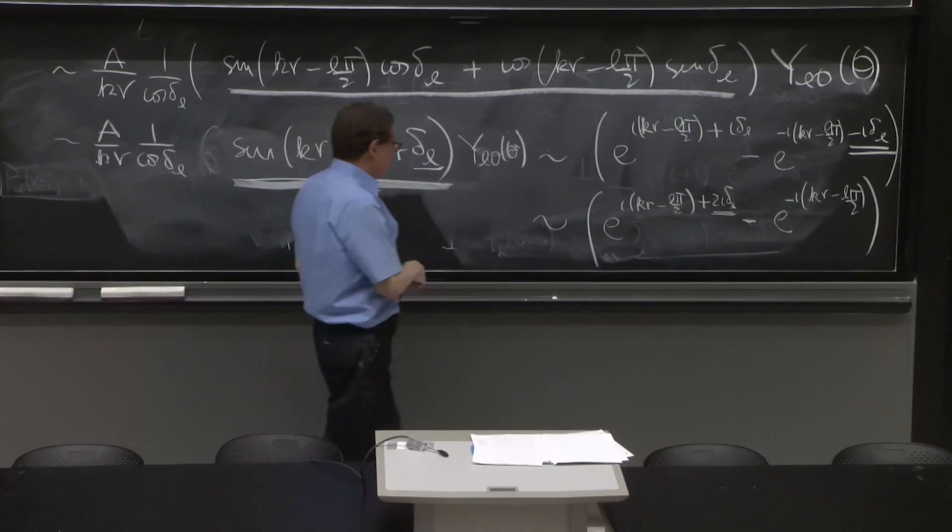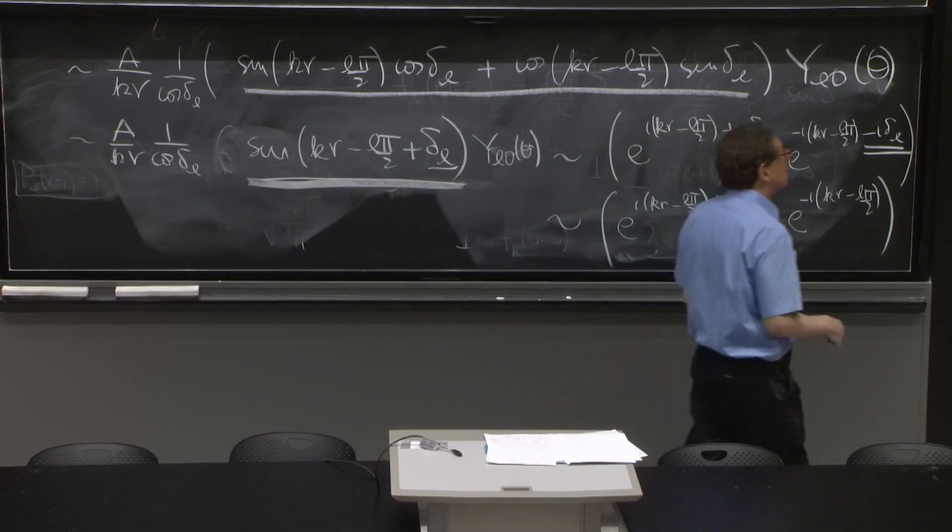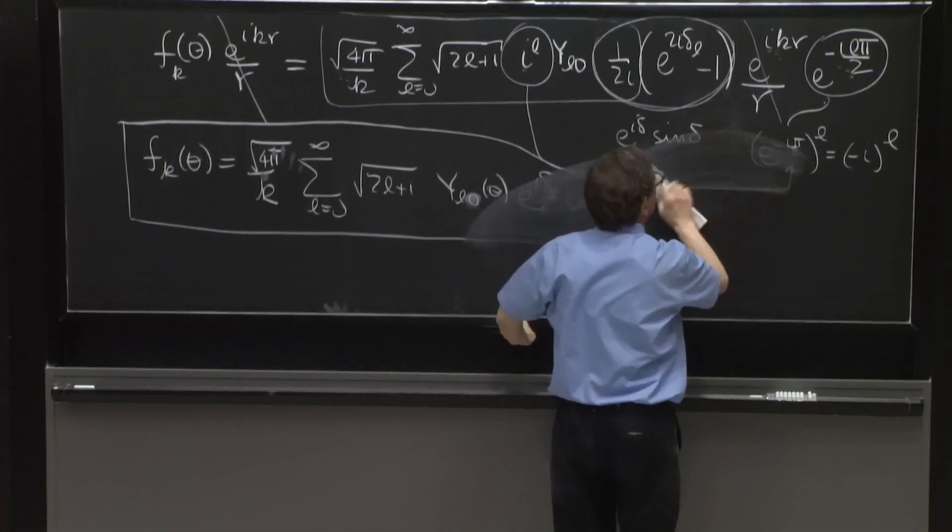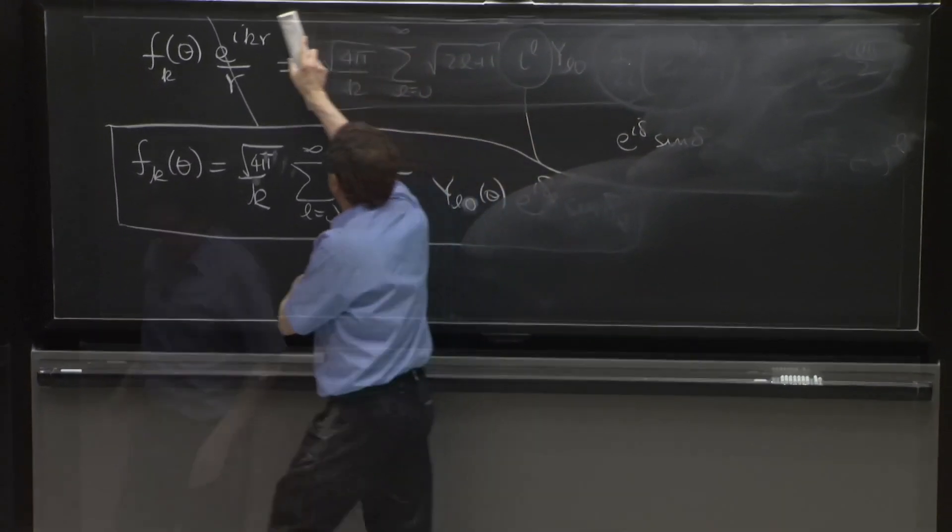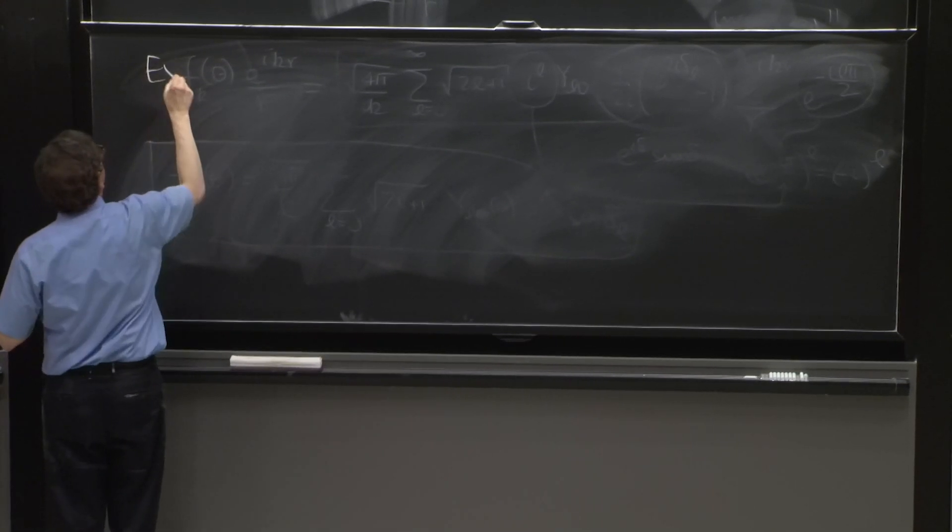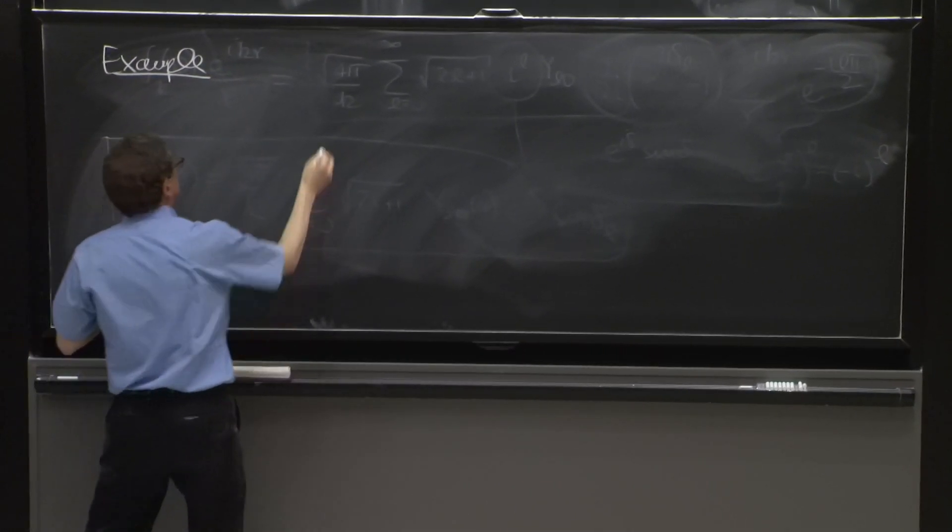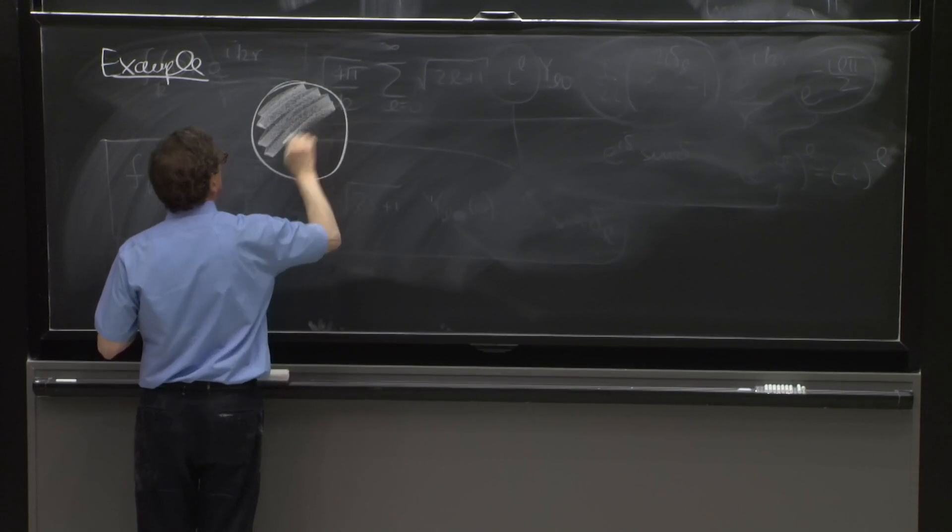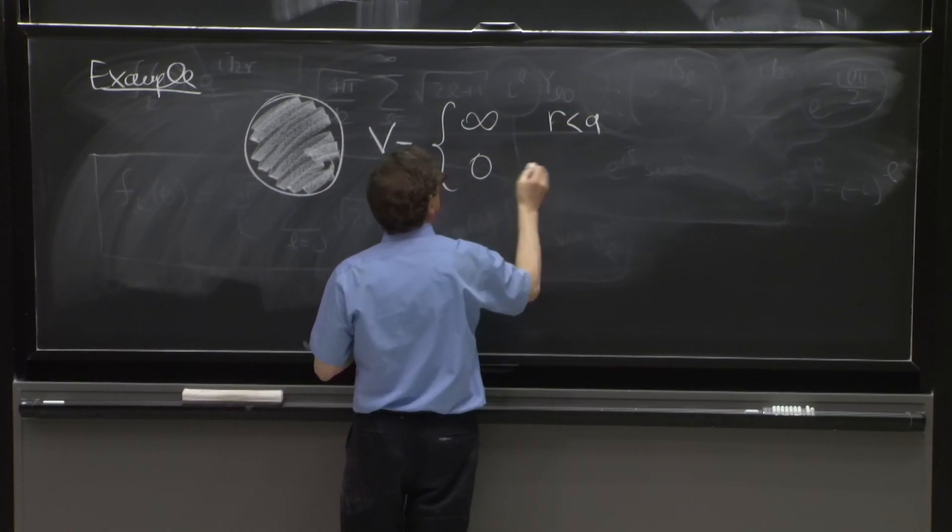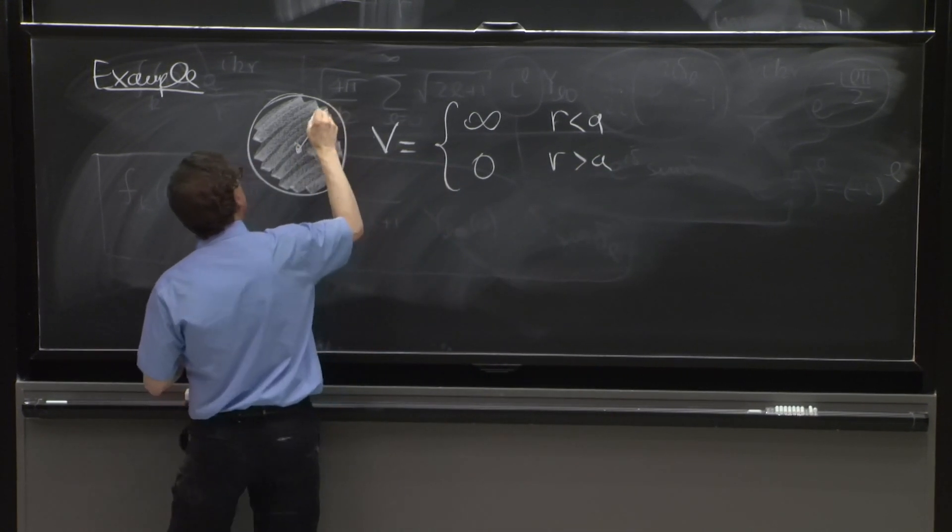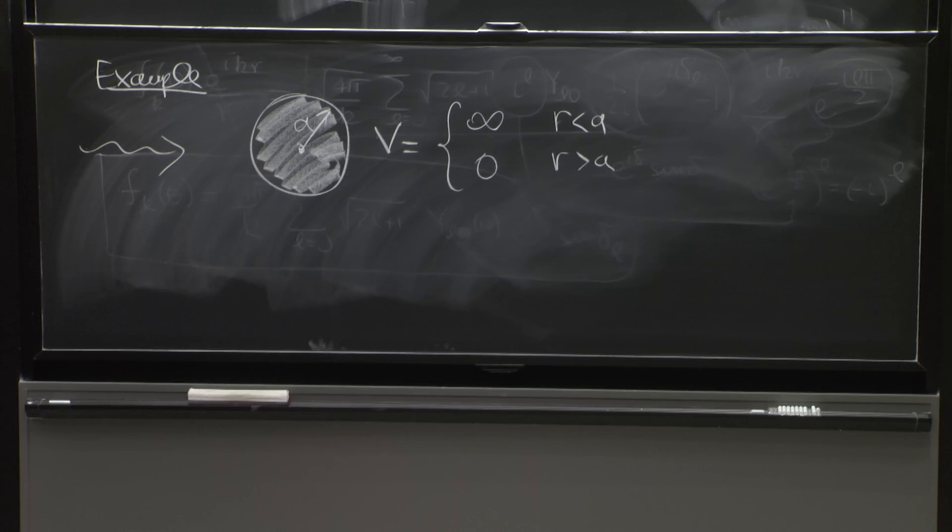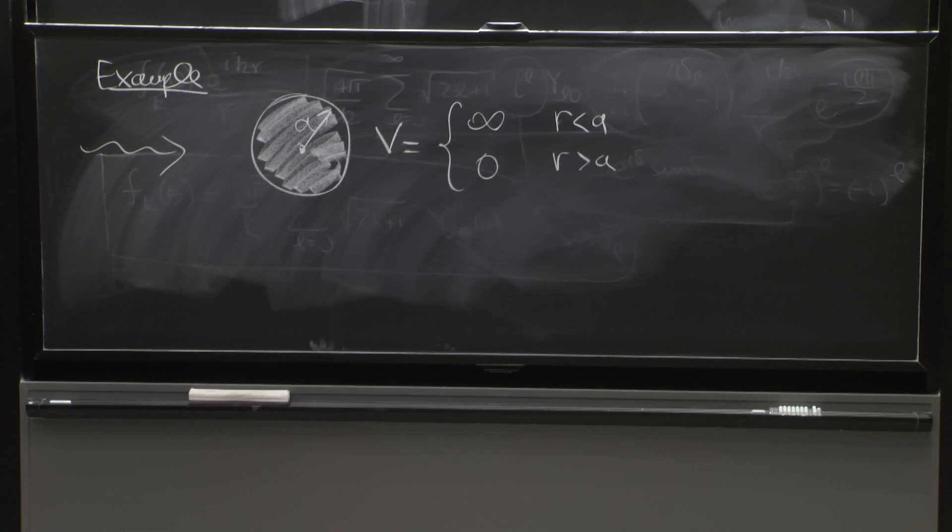Instead of elaborating more on this, let's do one example to convince you that this is solvable and doable, in fact. So the example is a hard sphere example. This is the object that you're scattering off. The potential is equal to infinity for r less than a and 0 for r greater than a. This is the origin and radius a sphere. The waves come in. You want the cross section. It might look like this is hard. Well, how are we ever going to solve this? In fact, it will be very easy.